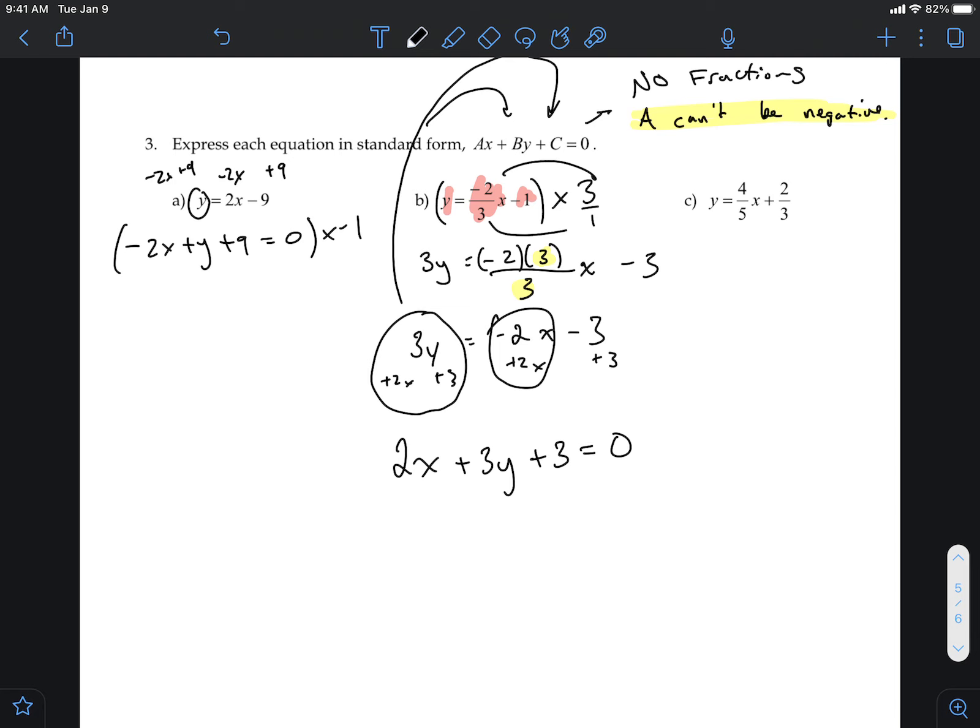So now you're going to get 2x minus y minus nine equals zero. And that'll be that. All righty.